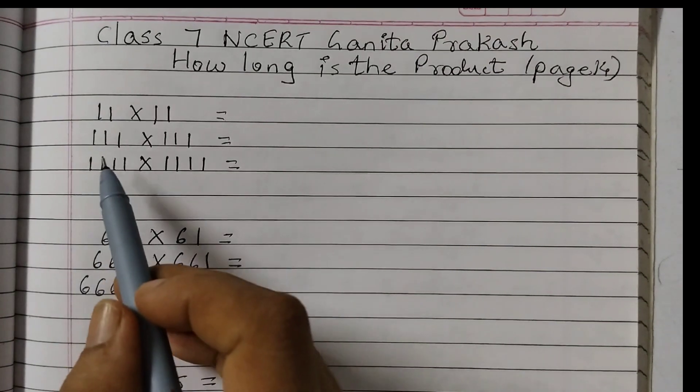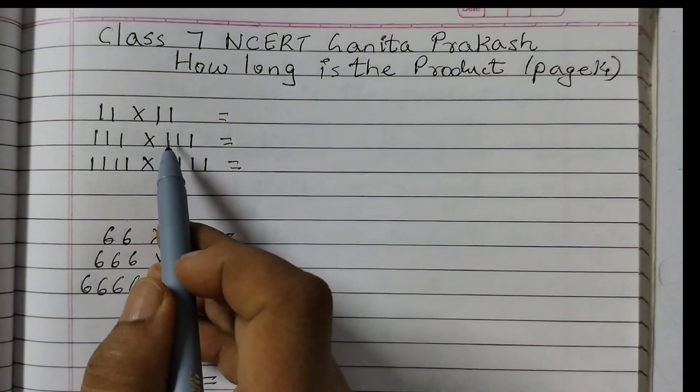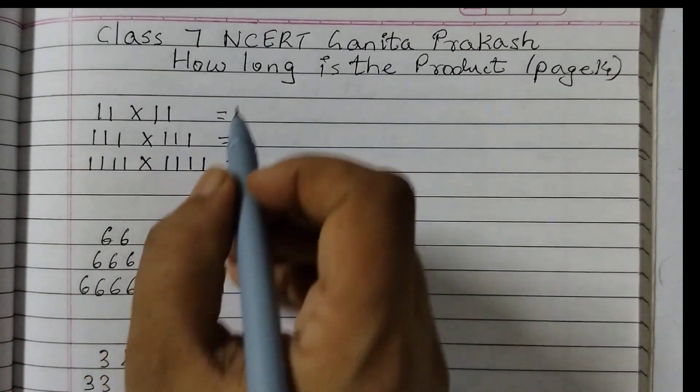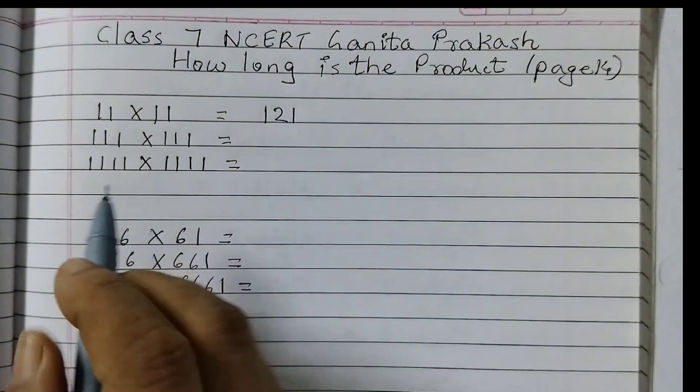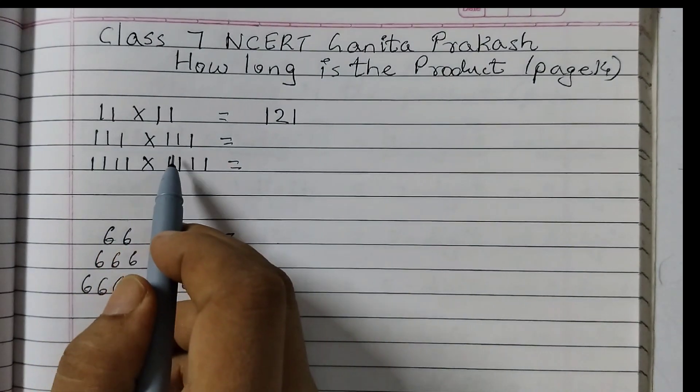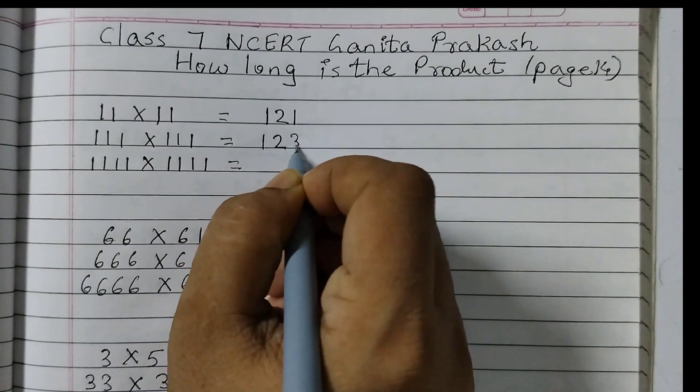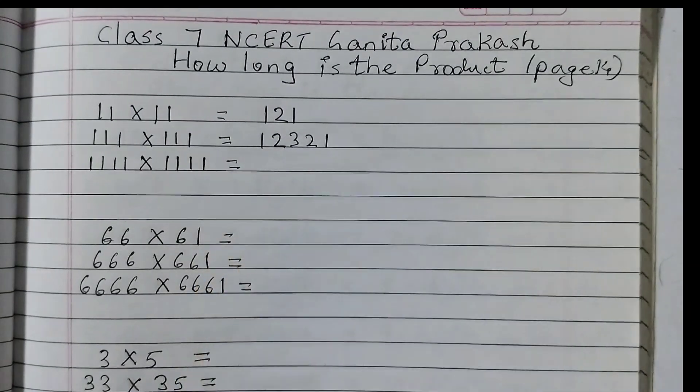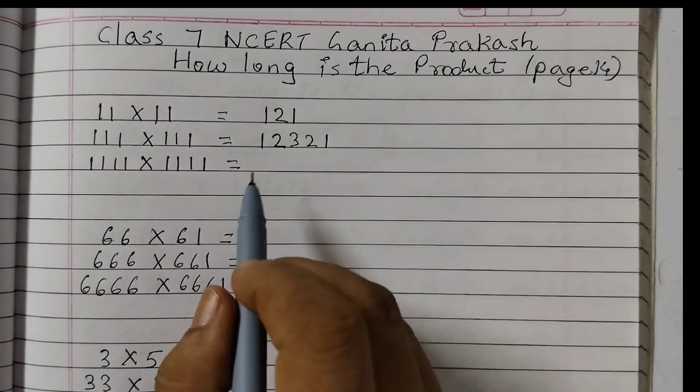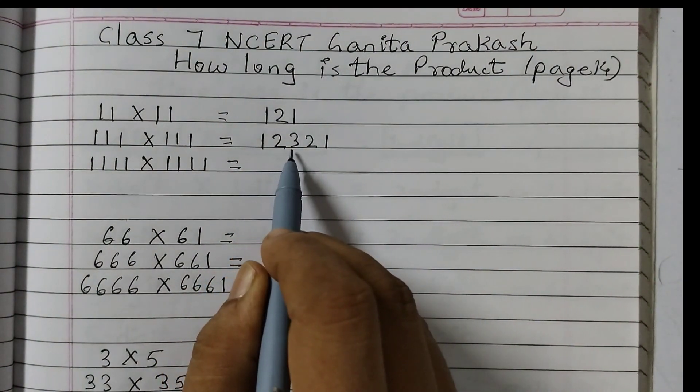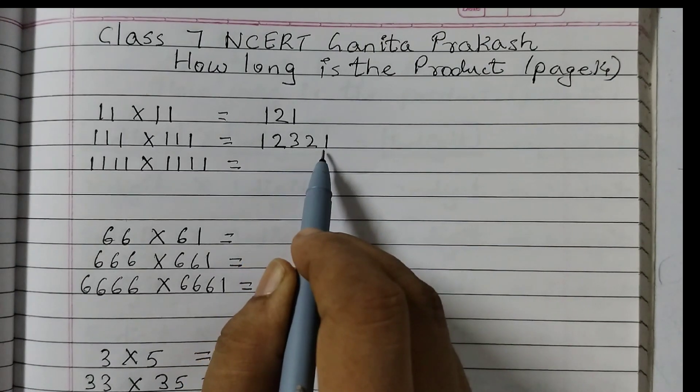The first one is 11 into 11. So when we multiply 11 and 11 we get 121. 111 into 111 would give us 12321. So what is the pattern? The pattern is that we start from 1, we reach 1 number and then again we move back.